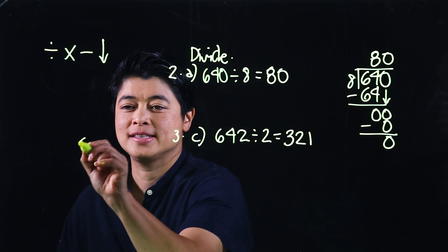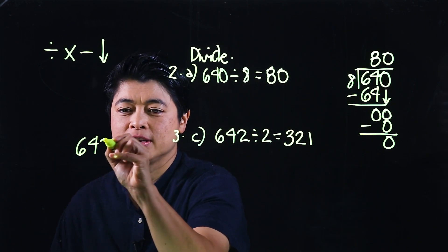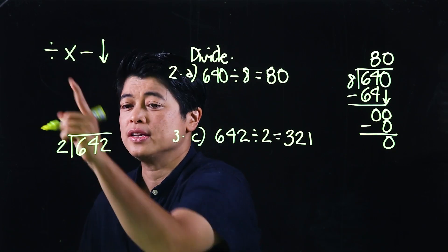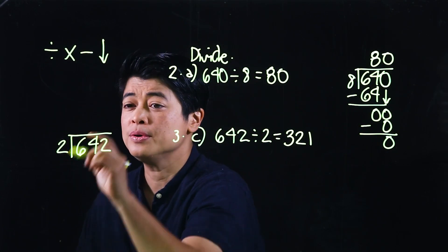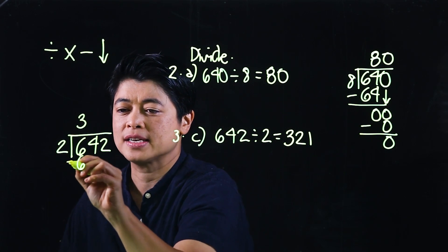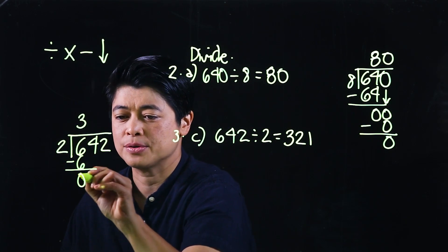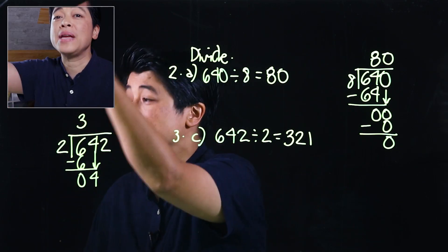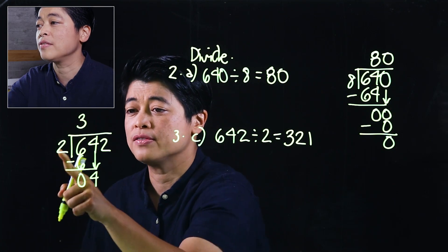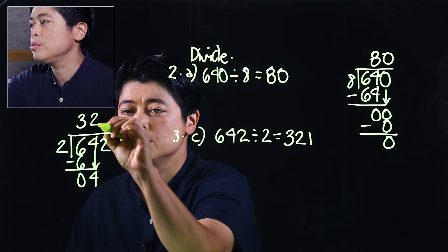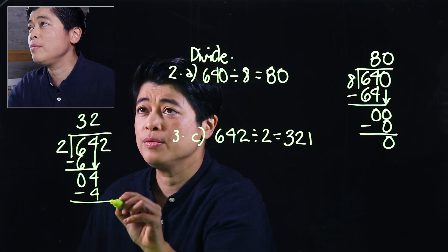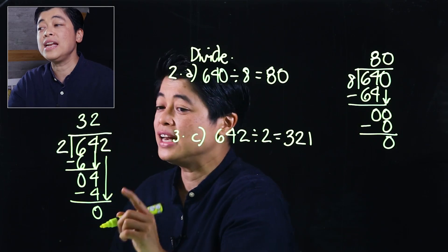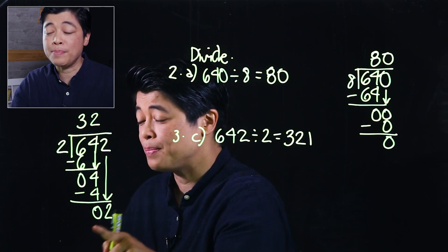But if you need to show your kids how to do this written out, we start with division: 6 divided by 2 is 3, multiply 6, subtract 0, then bring down 4. Then we divide again because it's a repeated process: 4 divided by 2 is 2, multiply 4, then we subtract and then we bring down. Finally, we divide again because it's a repeated process.